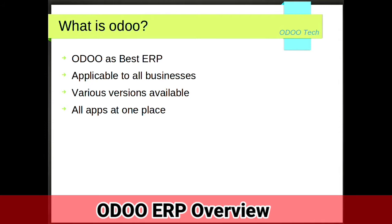Voodoo is applicable to all businesses — small, large, and medium. For example, if you are running a small business shop, purchasing products from outside and selling to customers, you need purchase, sales, and billing invoice applications. These three applications are combined together with built-in integration in Voodoo. Voodoo releases new versions every year, and currently we are using Voodoo 15, with Voodoo 16 coming in October.